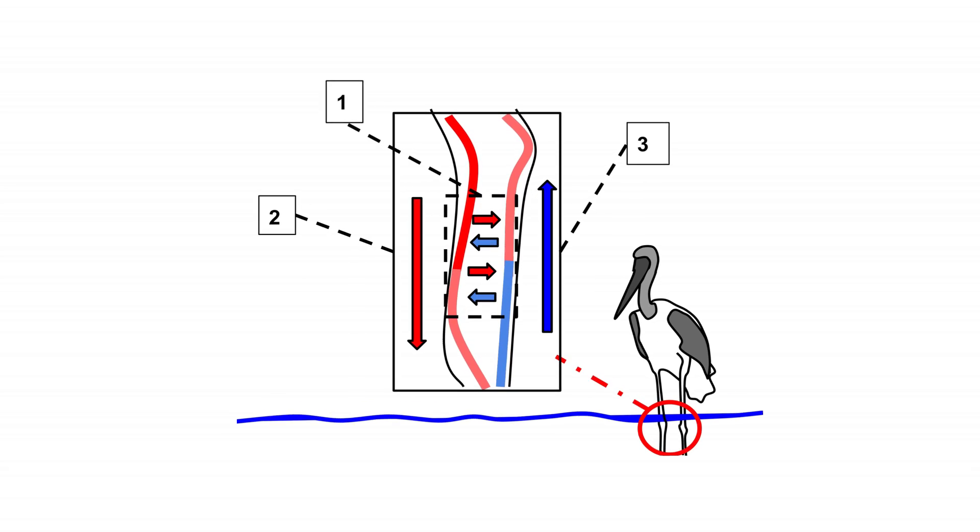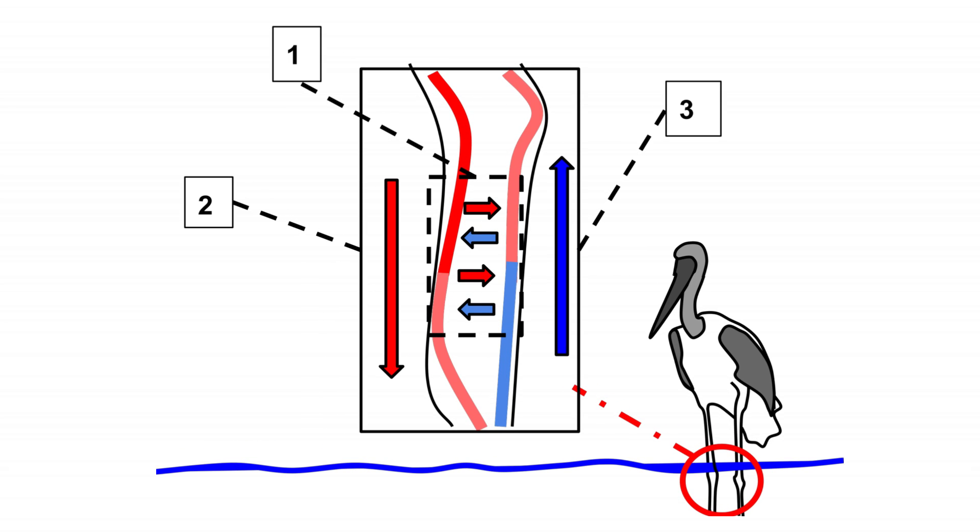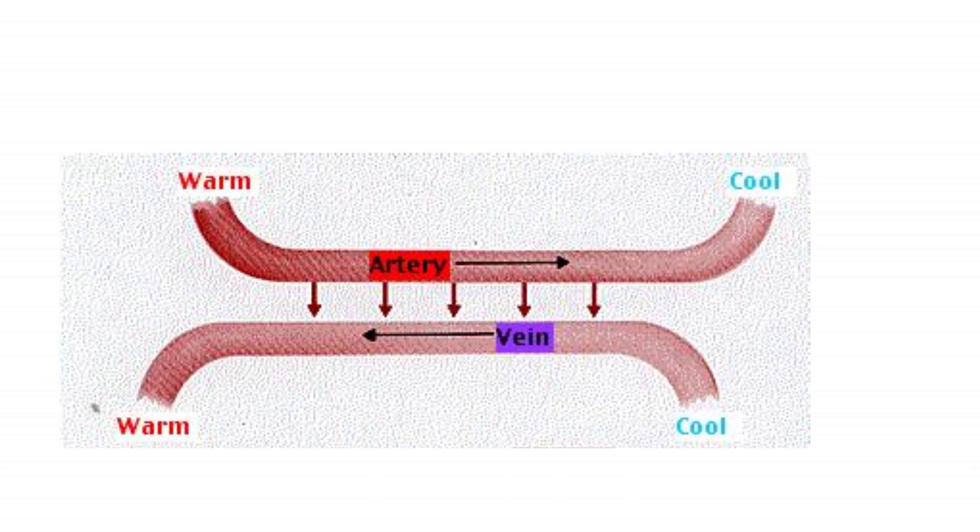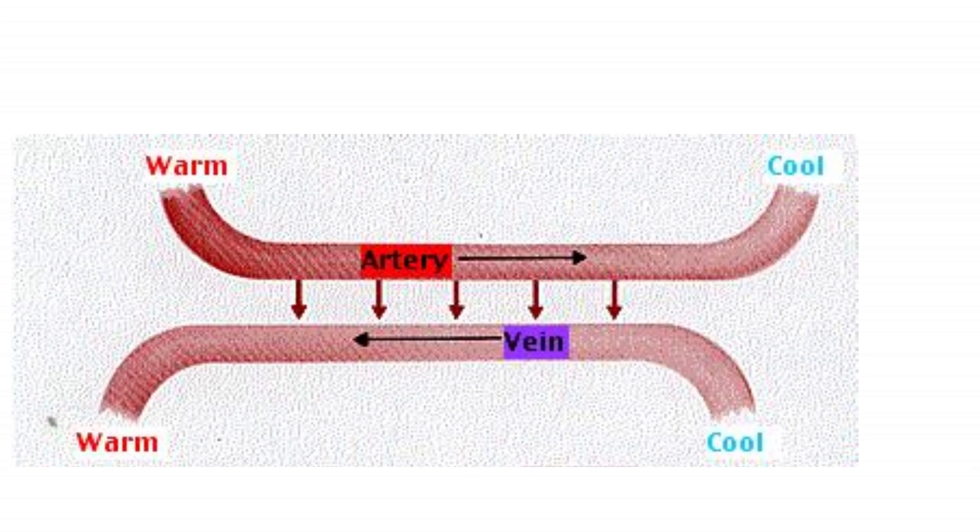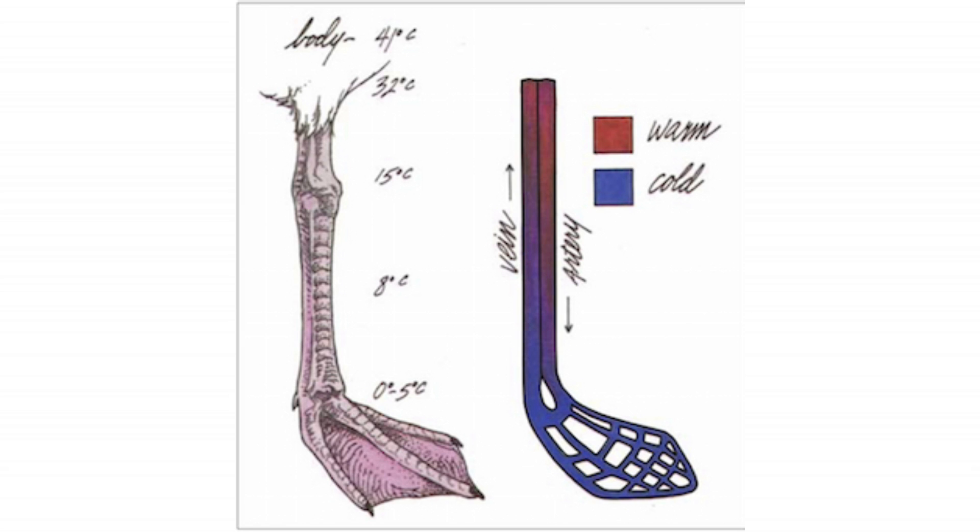There's a little biological heat exchanger in the crane located in the lower part of its body. This heat exchanger allows the transfer of heat between the outgoing hot blood to the legs and the incoming cold blood from the legs. The transfer of heat between the two blood streams reduces the temperature difference between them.